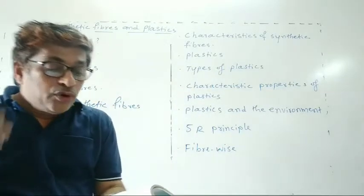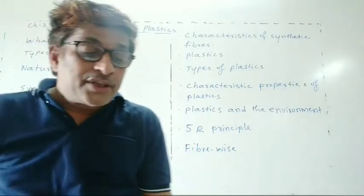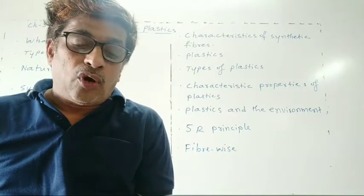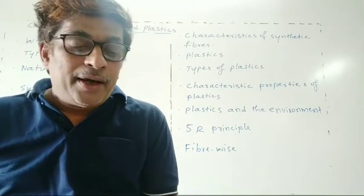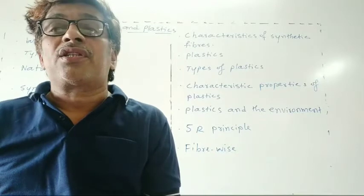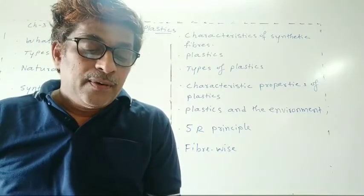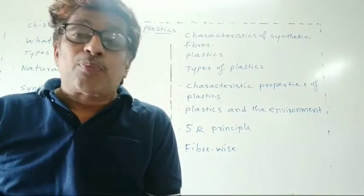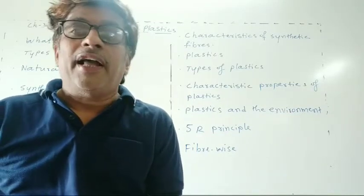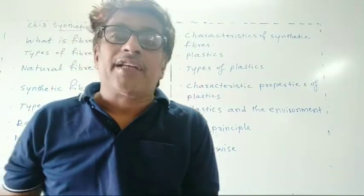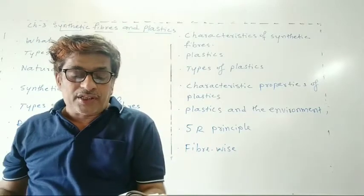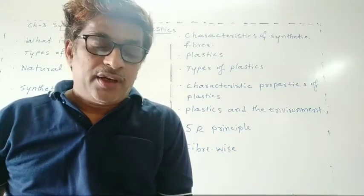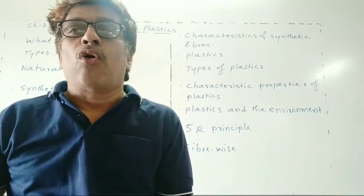Plastics which can be deformed easily on heating and can be bent easily are known as thermoplastics. Polythene and PVC are some examples of thermoplastics. These are used for manufacturing toys, combs, and various types of containers.